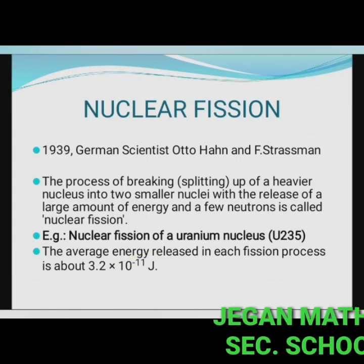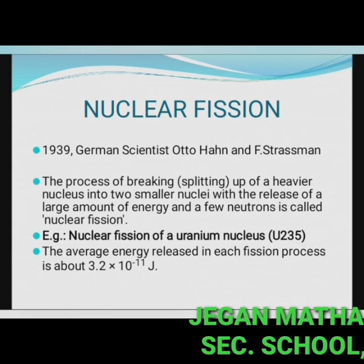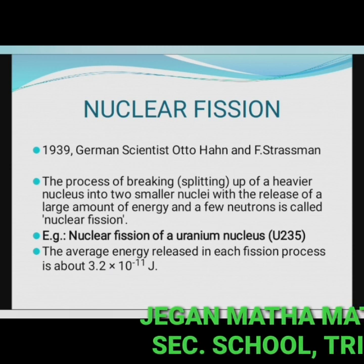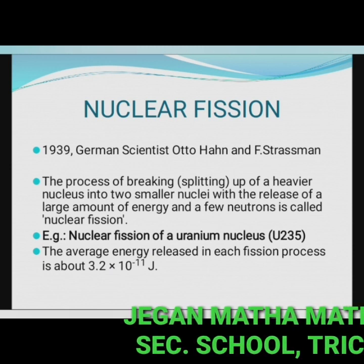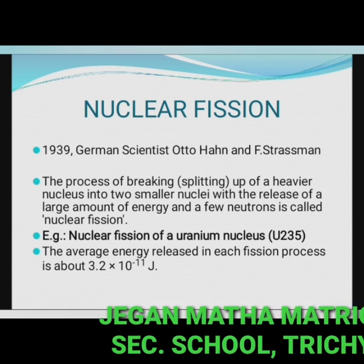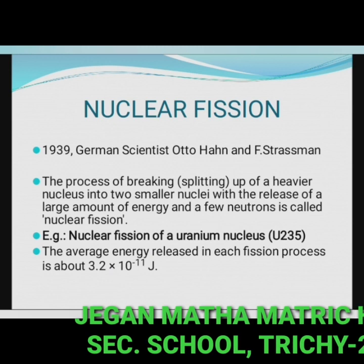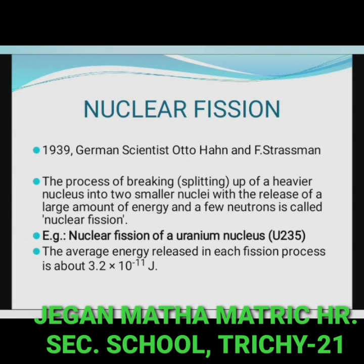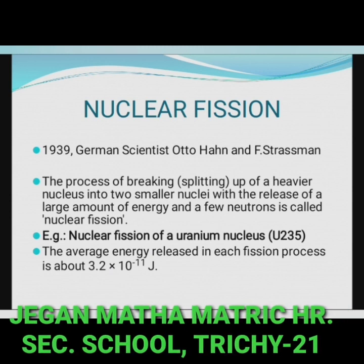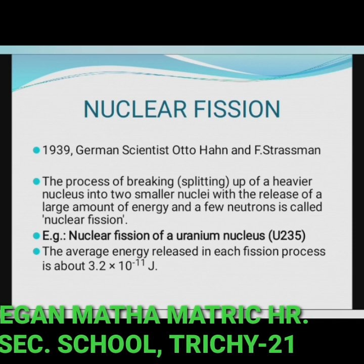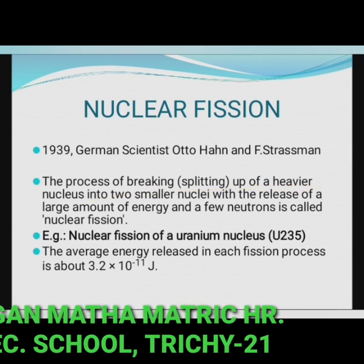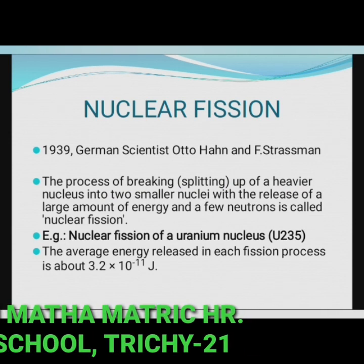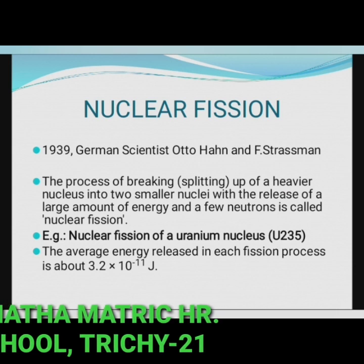In 1939, German scientist Otto Hahn and Strassmann discovered that when a uranium nucleus is bombarded with a neutron, it breaks up into two smaller nuclei of comparable mass along with the emission of a few neutrons and energy. This process of breaking up of a heavier nucleus into smaller nuclei with the release of a large amount of energy and a few neutrons is called nuclear fission.